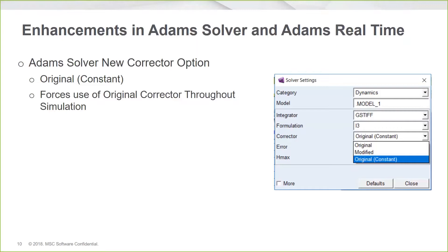The corrector argument now has another option: original underscore constant. You can pick original constant in the Adams review solver settings dialogue as well. This is different from selecting original — if you select original, Adams Solver starts using the original corrector, but when a certain amount of difficulty with convergence is encountered, it will automatically switch to the modified corrector, which has looser criteria and helps get through difficult spots, but with limited accuracy. Some users have said that if they have to resort to the modified corrector, they don't like the results anyway, so they'd prefer an option to keep the original corrector on. If it doesn't converge, they know something needs to be fixed in the model.